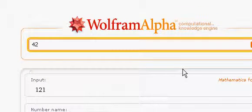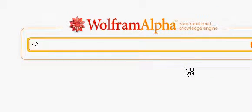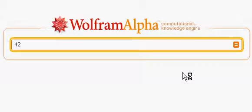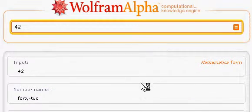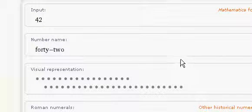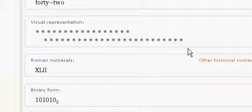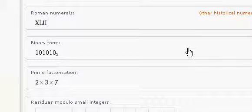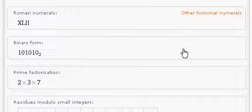See what Wolfram Alpha thinks about number 42. Okay, number 42, visual representation. I'm not quite sure what that means. There are Roman numerals, XLII, binary form, prime factorization 2 times 3 times 7, which is 6 times 7, right?